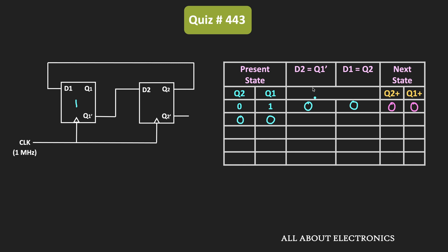Once again, since D2 is equal to Q1-bar and Q1=0, D2 will become 1. Since D1 is equal to Q2 and Q2=0, D1 will be 0. So the inputs for the two flip-flops are 1 and 0. Therefore, at the next clock pulse, Q2 and Q1 will be equal to 1 and 0. This will once again be the present state of the two flip-flops.